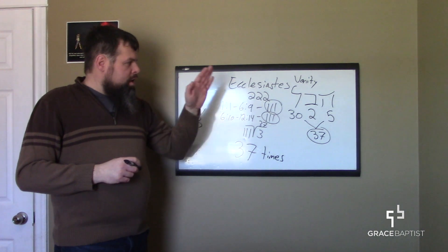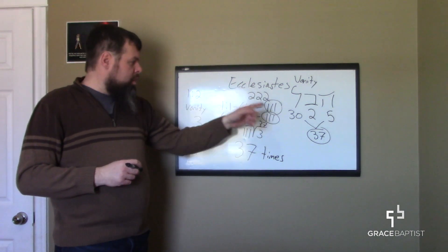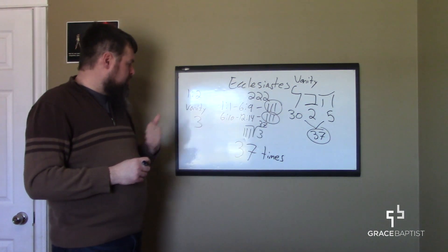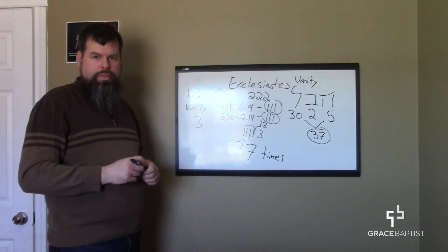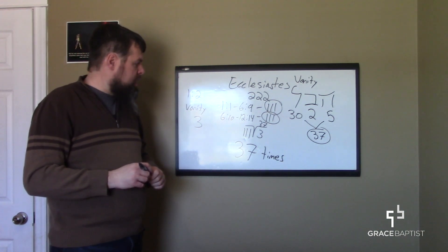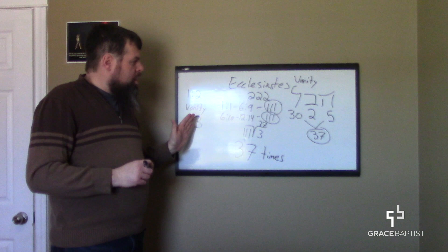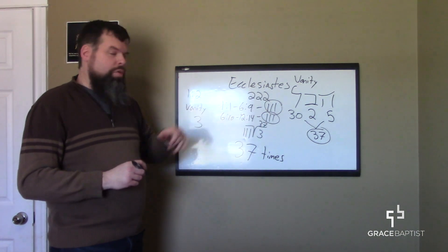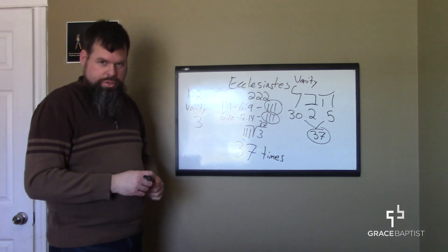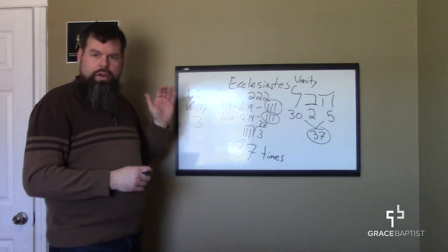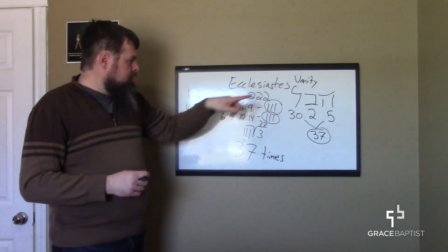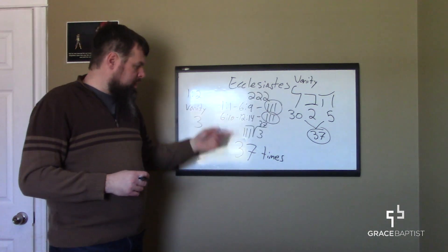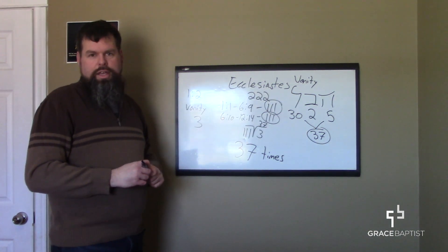So the word meaninglessness with a numerical value of 37 repeated three times right out of the gate by the author, by the preacher, Solomon, to let us know perhaps, multiply 37 by 3, you get 111, and 111 by 2 is the entirety of the verses in the book of Ecclesiastes. And in order that we didn't miss it, he uses that word with a numerical value of 37 exactly 37 times in the book.